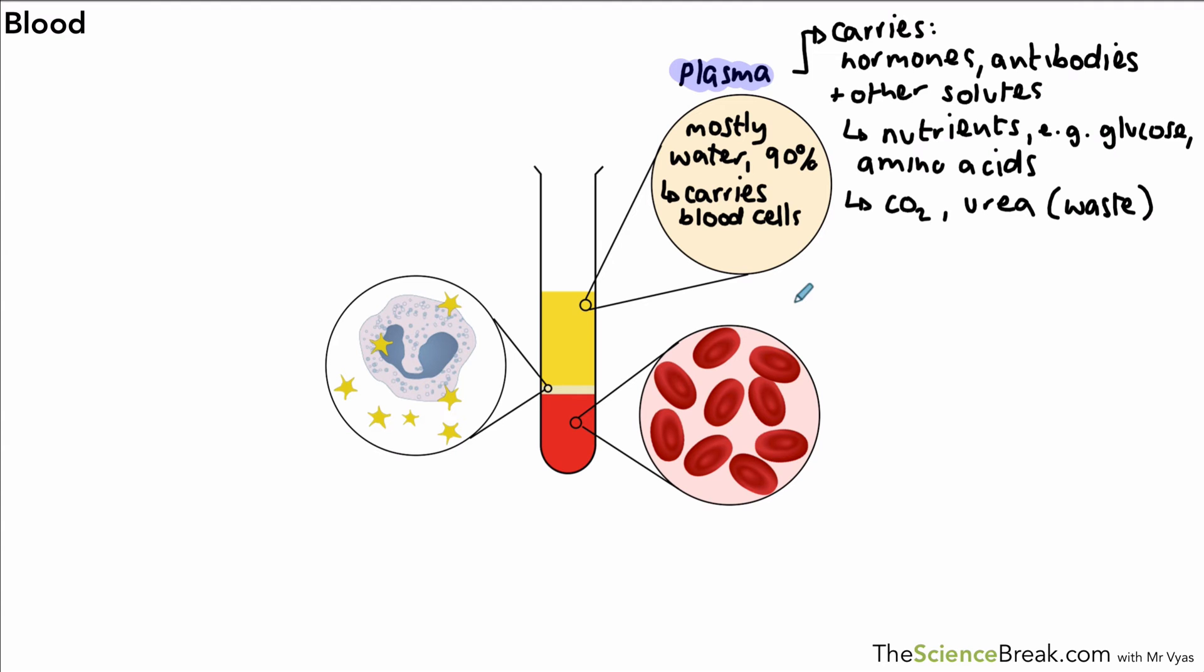We have next our red blood cells, and the one single job that the red blood cells have is to carry oxygen. Red blood cells carry oxygen around the body, and the red blood cells have a bunch of adaptations to help them do this as effectively as possible.